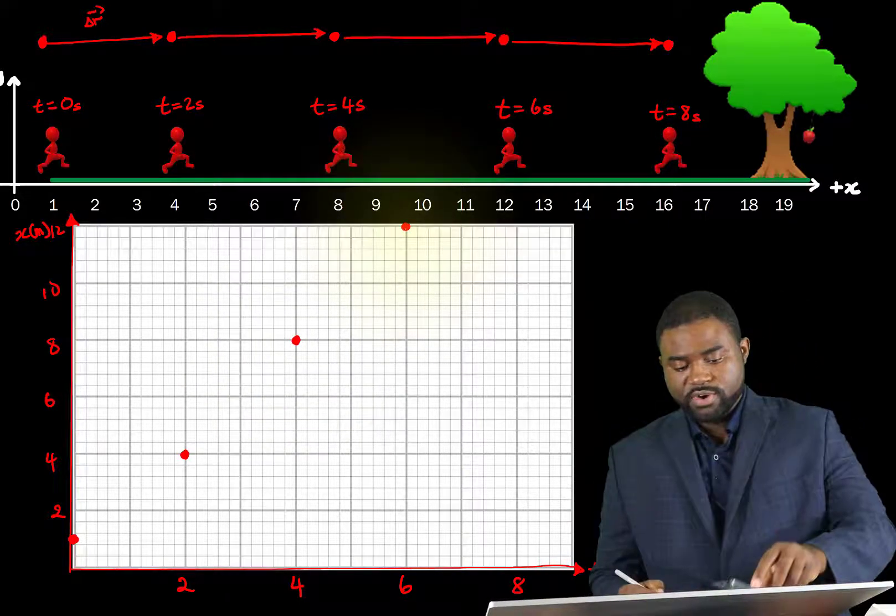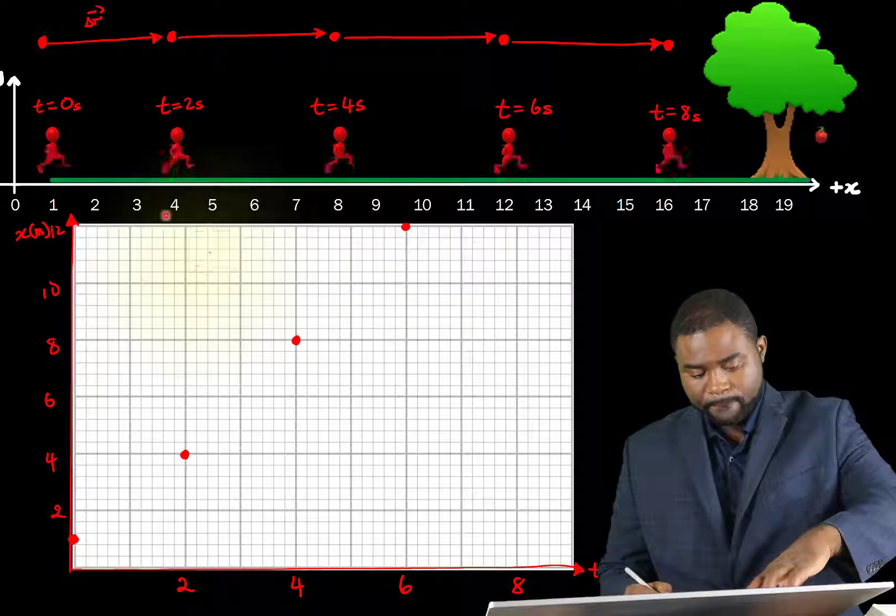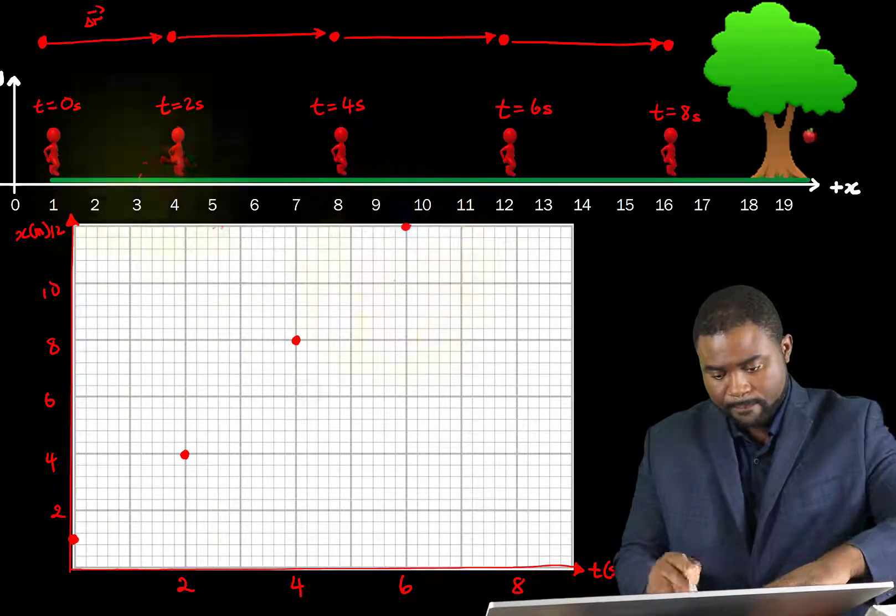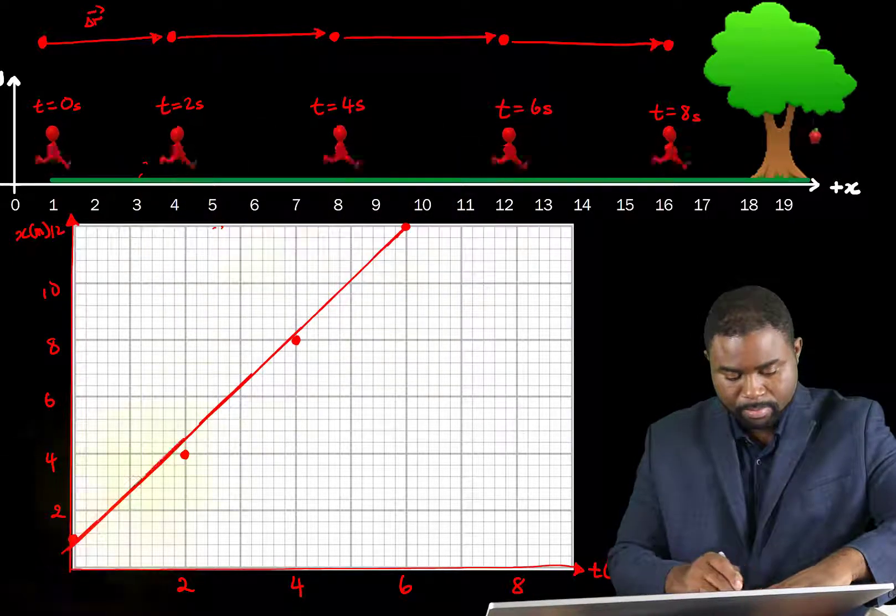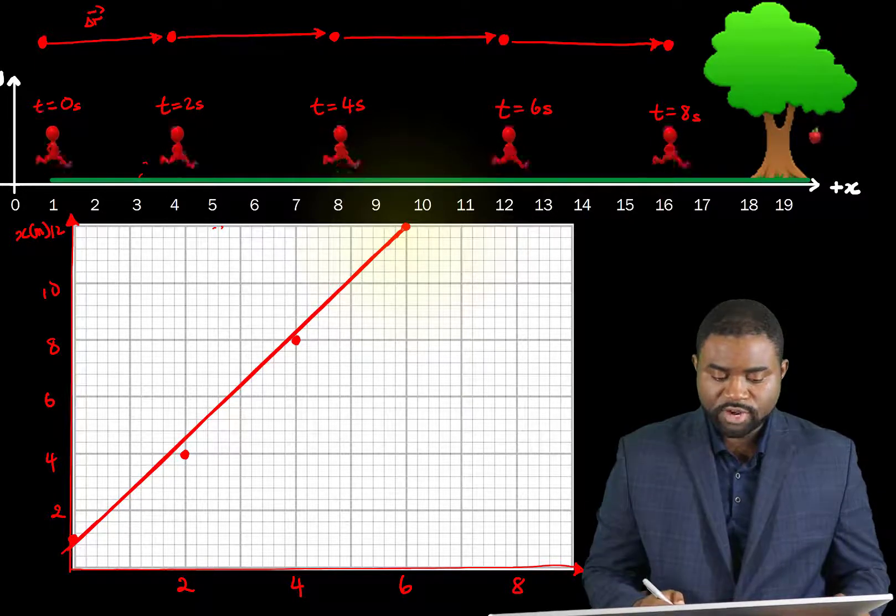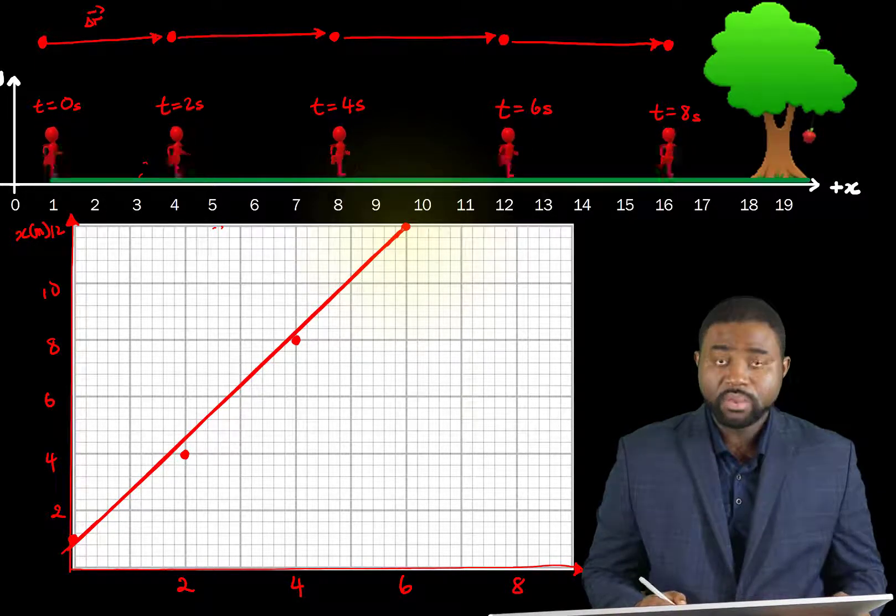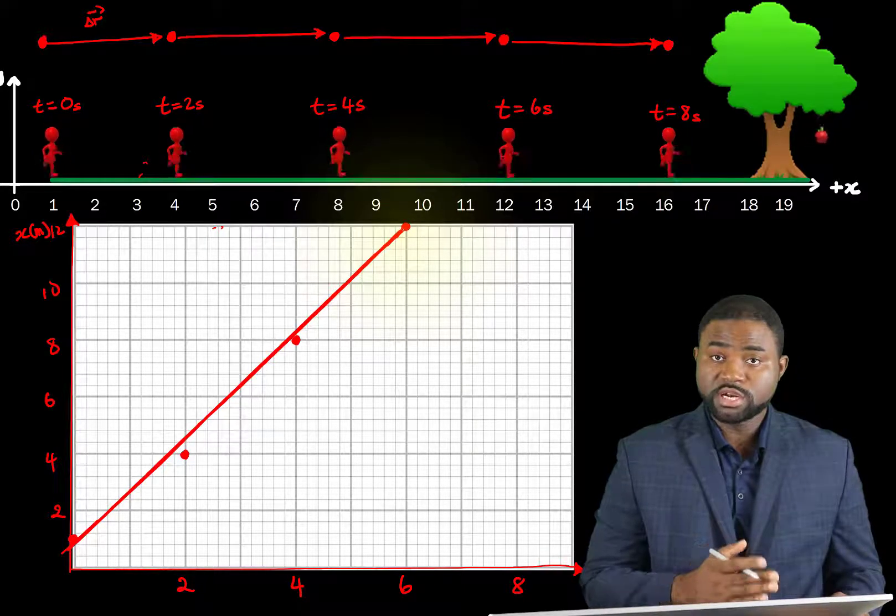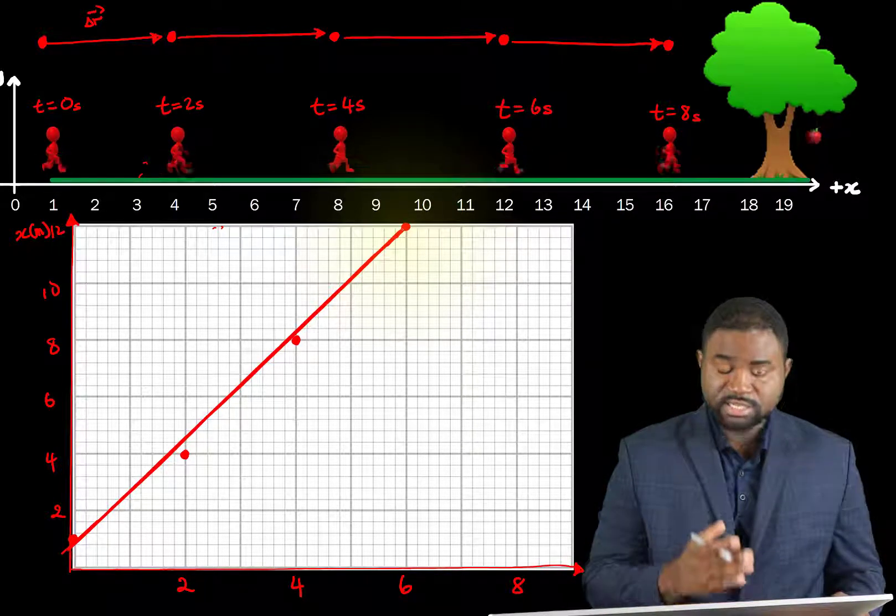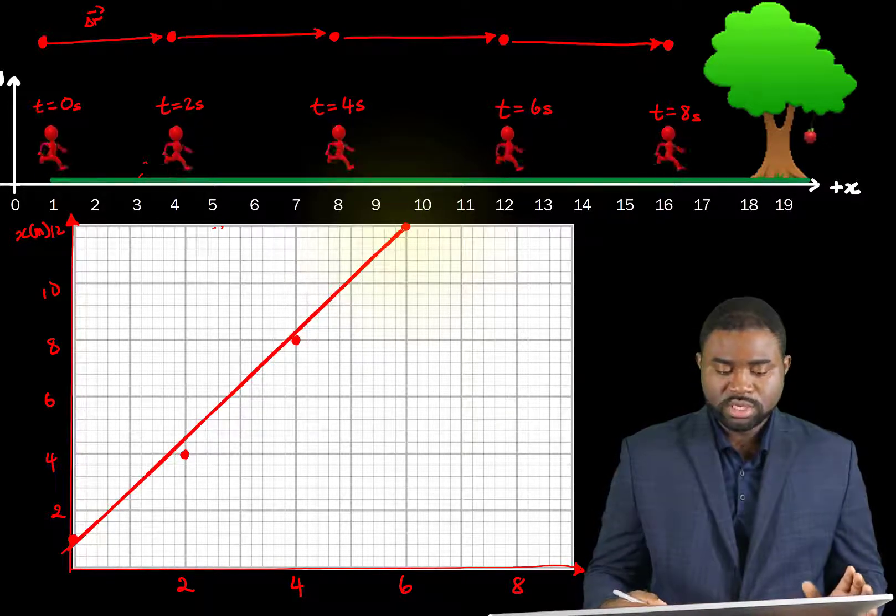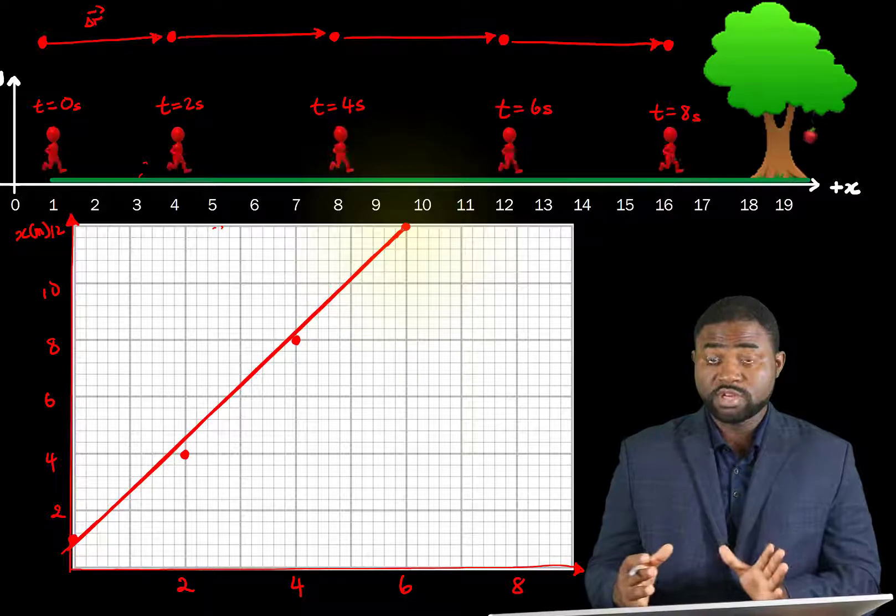So if we draw a graph, the graph will look like that. You see that the graph is a straight line signifying that the position increases at a steady rate as the time increases. In other words, he is moving with a constant velocity.